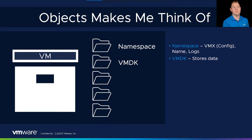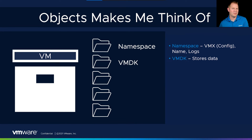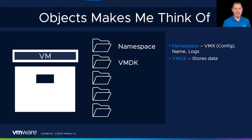For example, that first VMDK might be our OS — I want more resiliency to protect against more failures in the environment. But maybe the second VMDK is our application drive where I want screaming fast performance. If I lose the data, not a big deal, because I want that performance. So we can customize it based on our needs.